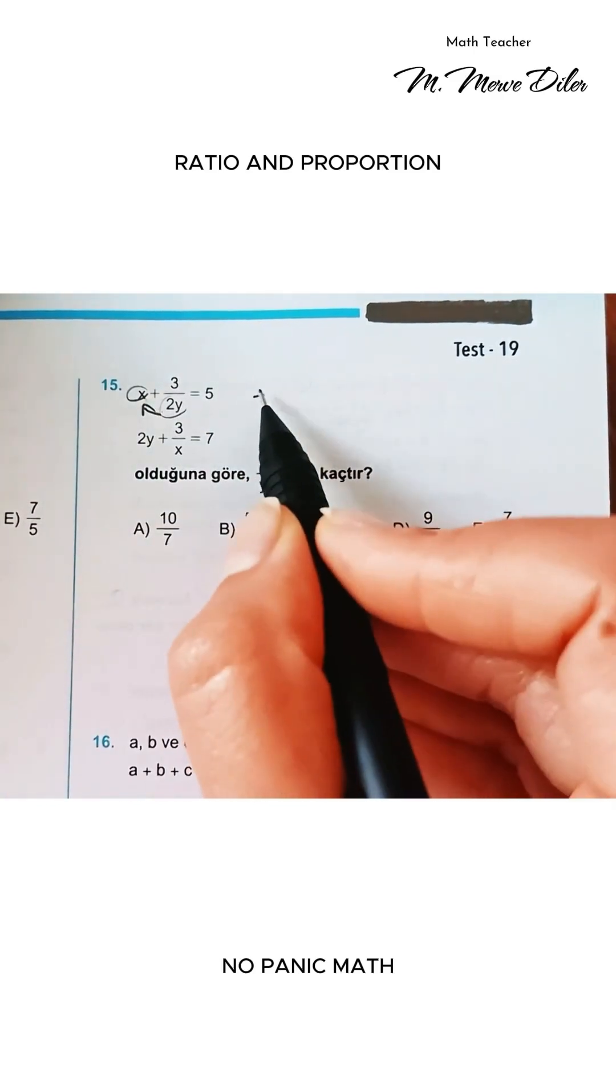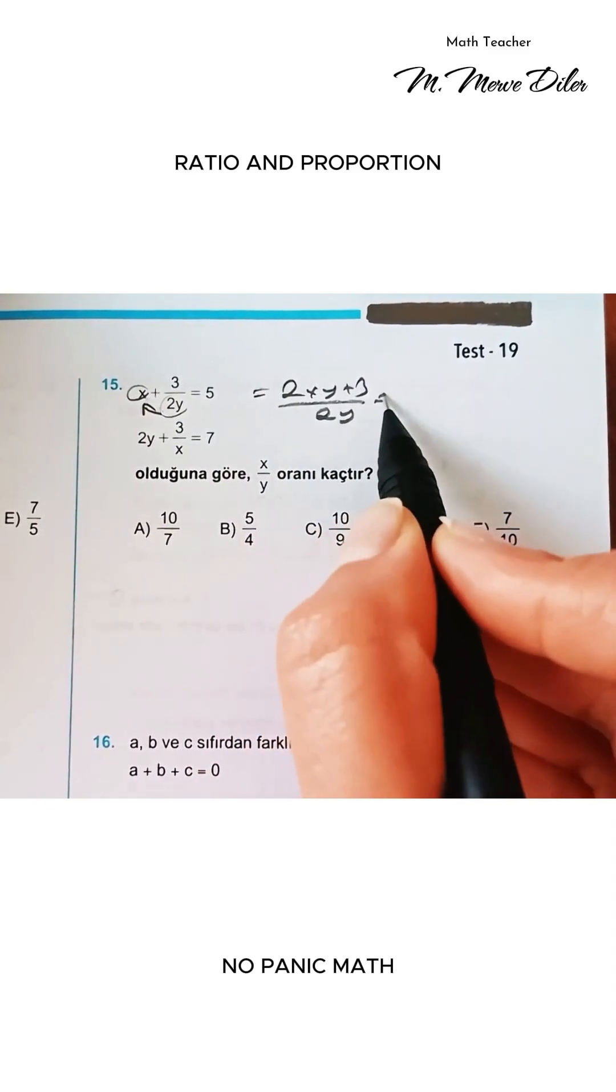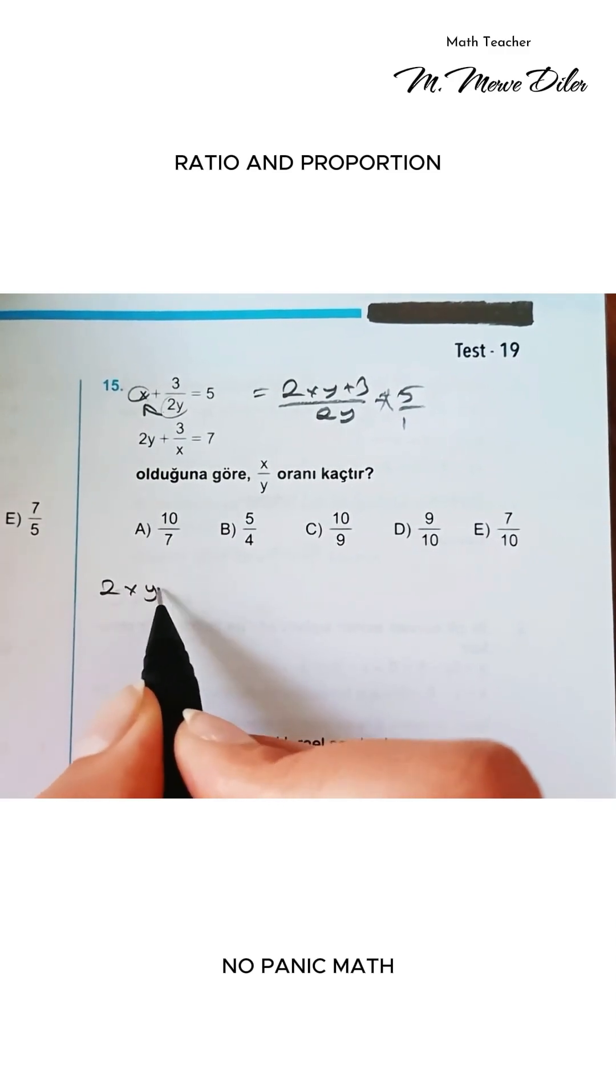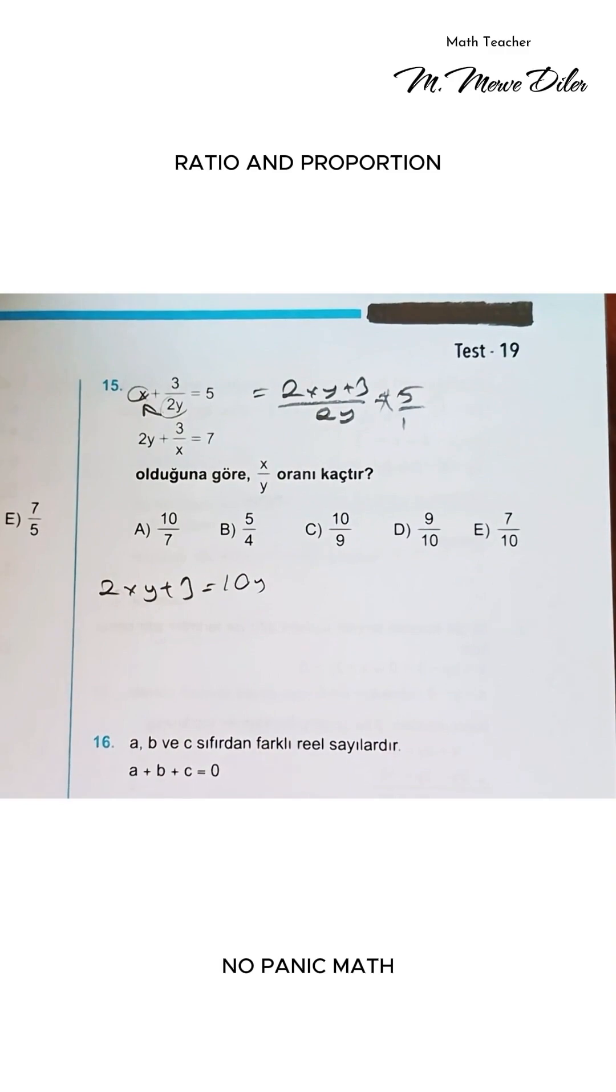Let's start with the first equation. Let's multiply x by 2 like this: 2xy plus 3 over 2y equals 5. If you do a cross multiplication here, you'll get 2xy plus 3 equals 2 times 5, which is 10, and don't forget the y, so it becomes 10y.